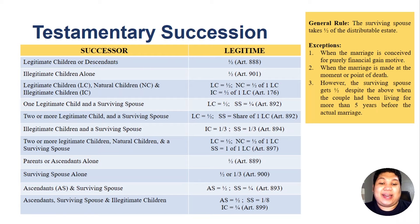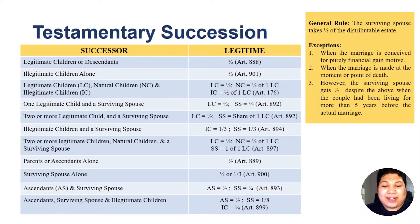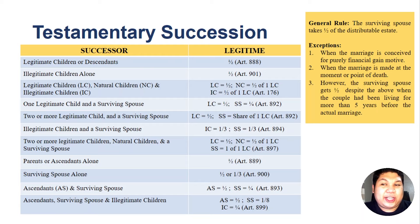If there is an ascendant and a surviving spouse, the ascendant gets one half of the entire estate, the surviving spouse gets one fourth, and illegitimate children get one fourth of the entire estate. Among all successors mentioned, the legitimate child or children receive the highest value of inheritance — one half.